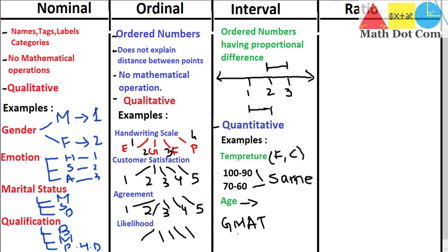Similarly, age is considered interval scale because we do not have an absolute zero age — we cannot compare the age of two persons with a reference point of zero. Another example is GMAT score: you cannot achieve a zero GMAT score, so there is a complete absence of zero in the score. Basically, in interval scale we do not have an absolute zero, so we cannot make a reference using zero value.